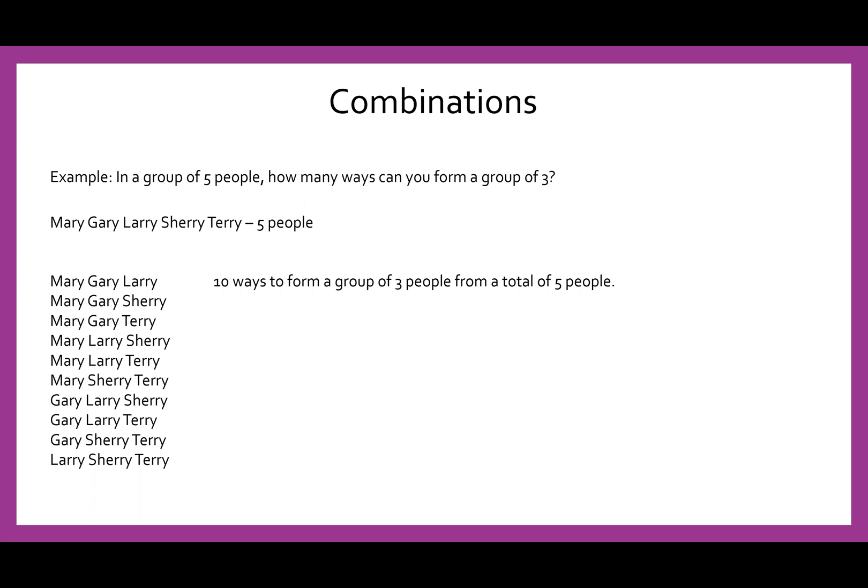Alright. If we don't want to list this all out, which of course we don't want to do that. There is a formula for combinations and notice it involves your beloved factorial, which is why we needed to review on that. So what you have here is little n on top. That represents the total number of things you can choose from. So in our case, we had five people. So our little n is five. And r is going to be how many things we're taking out. So we wanted to choose three people. So for us, r is three.